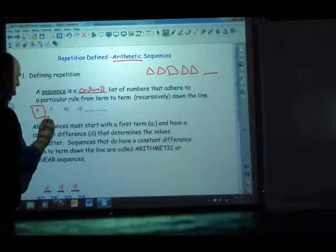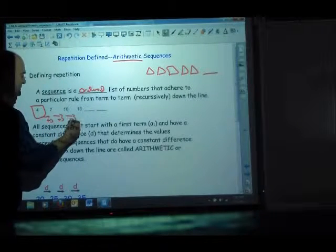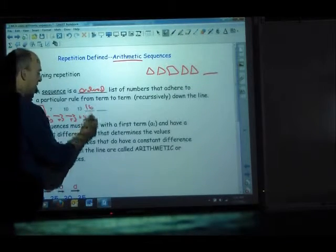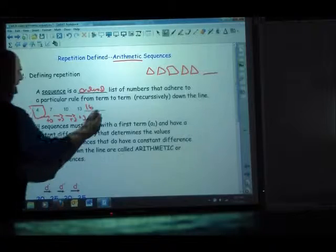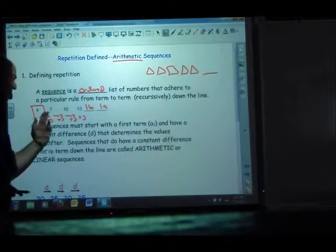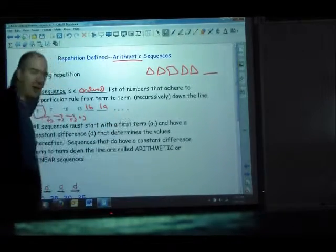So when you do that, that's called a constant difference. Every term is 3 bigger than the previous. It's a constant difference. So this would be 16 and 19, and these values all have names. This is the first term, this is the second, third, fourth, fifth, and sixth, and so on. We go down the line.